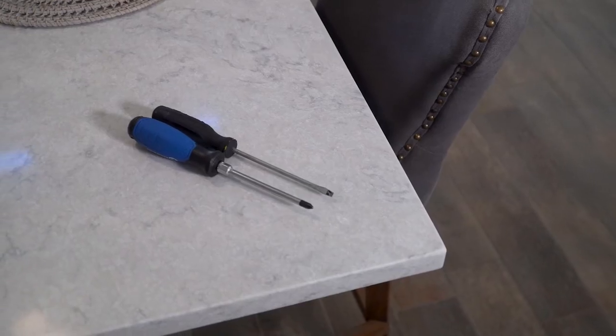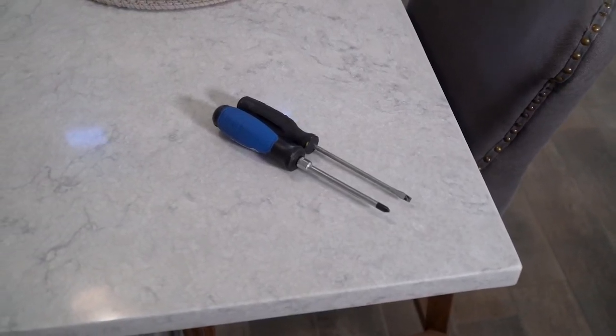My name is Ashley with Granville Homes and I'm here to show you how to adjust your toilet paper holder. For tools you'll need a small flathead and a Phillips screwdriver.